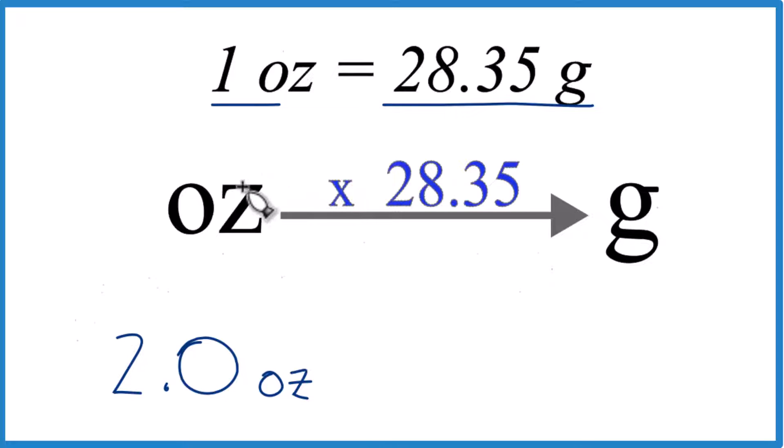Since we're going from ounces to grams, we're going to multiply by that 28.35 number. If we're going from grams to ounces, we just divide.